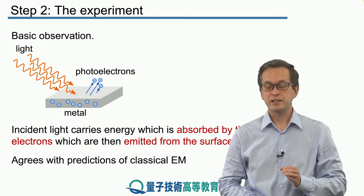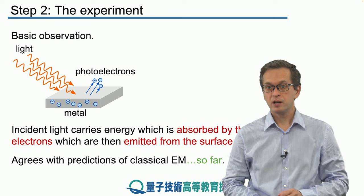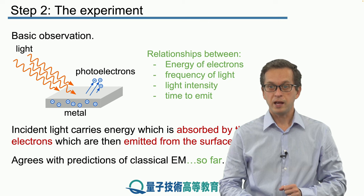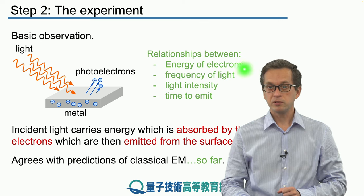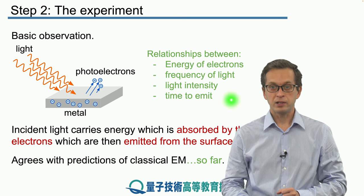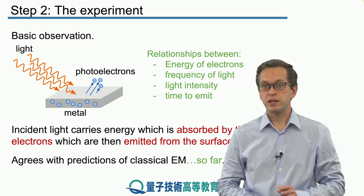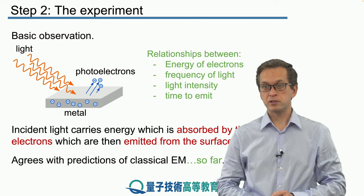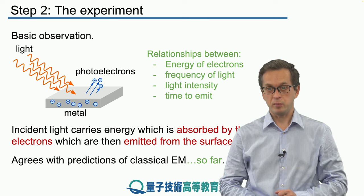But the devil is in the details. In particular we will explore the relationships between energy of the ejected electrons, the frequency of the light, the intensity of the light, and also the time it takes to emit the photoelectrons after we start shining the light on the metal.